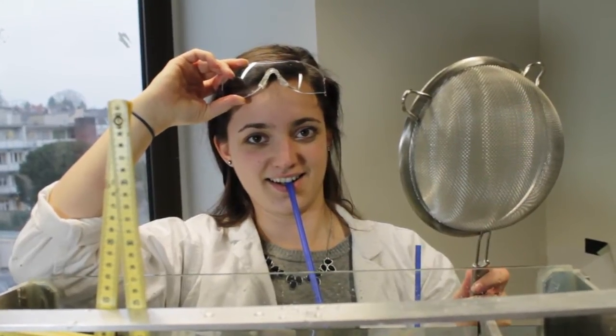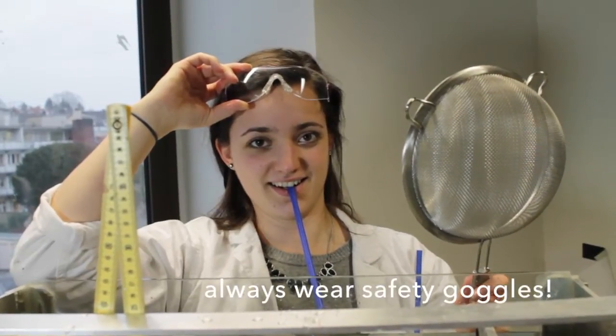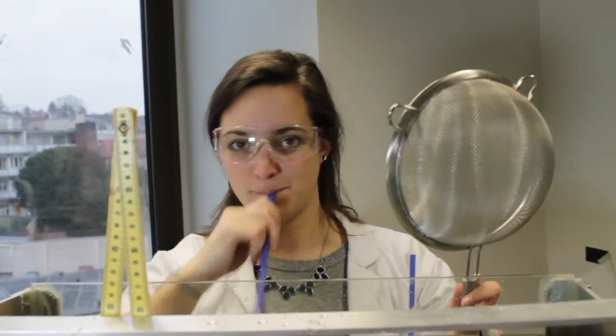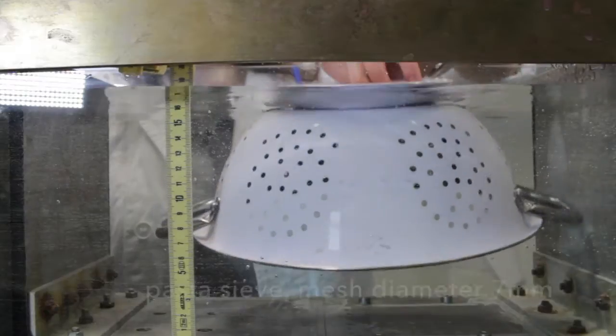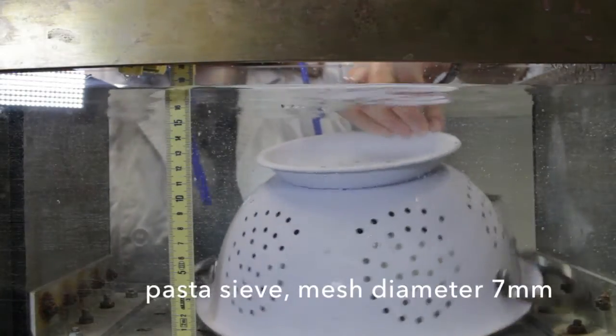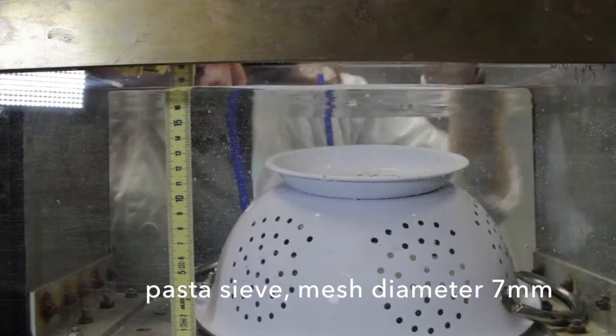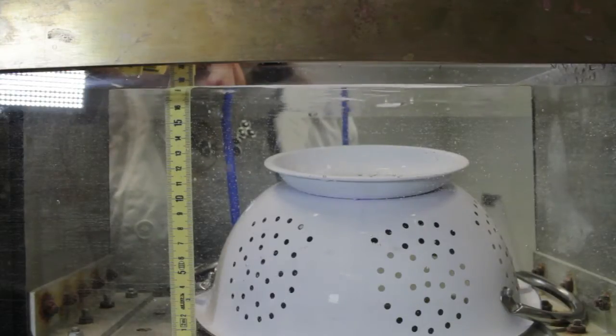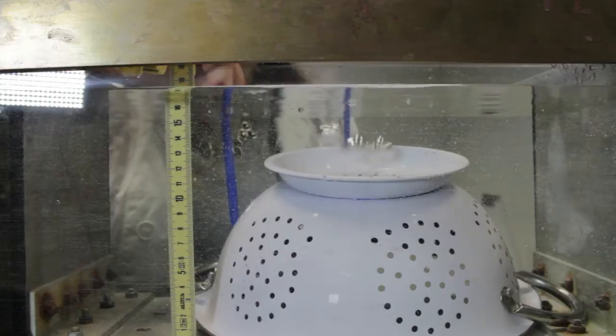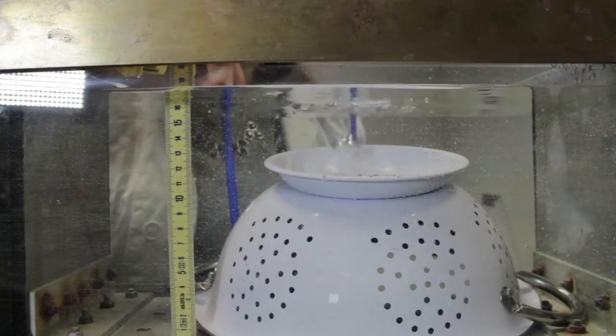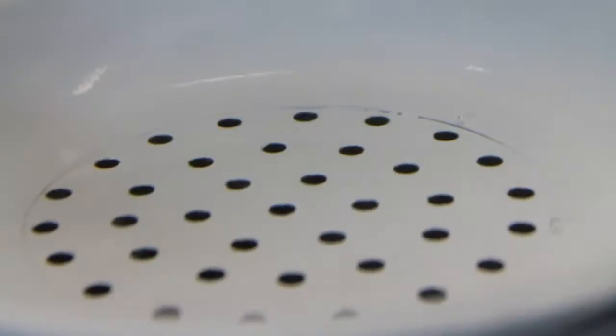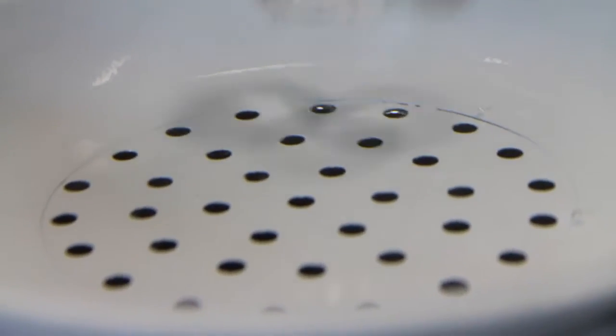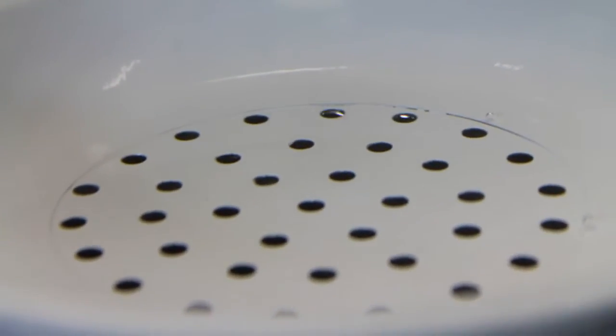We strongly recommend to wear safety goggles because our experiment is incredibly dangerous. At first we use a sieve with a very large mesh diameter around about 7mm. And as you can see the air bubbles are not held back underneath the sieve. But when you take a closer look, you can see that the air is held back to a certain degree.